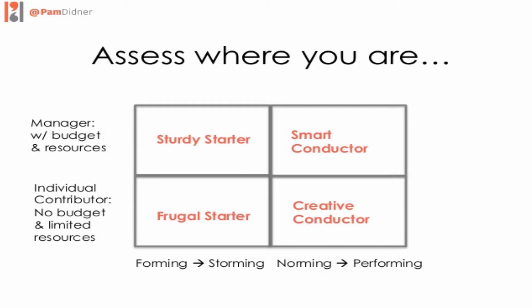I put together four scenarios or four quadrants, and I gave them names. If you are individual contributors — think about your role — and if clients don't have budget, I call them frugal starters, at the forming and storming stage. If you have limited budget and a virtual team, I call them creative conductors — your job is like a program manager, like a conductor. Forming and storming with budget and resources: sturdy starter. And then with a team in place, smart conductor — you lead them in the right direction.